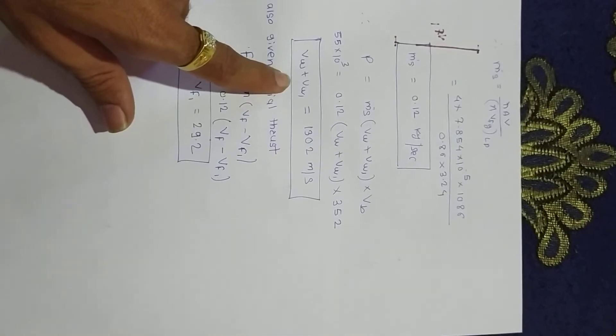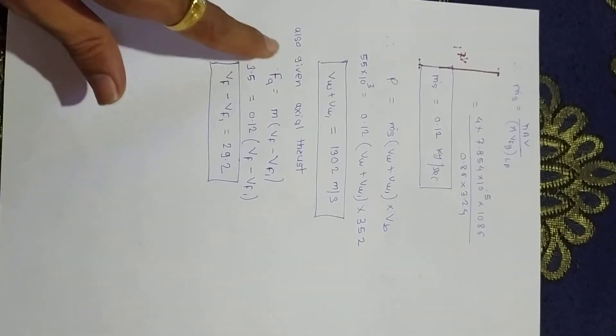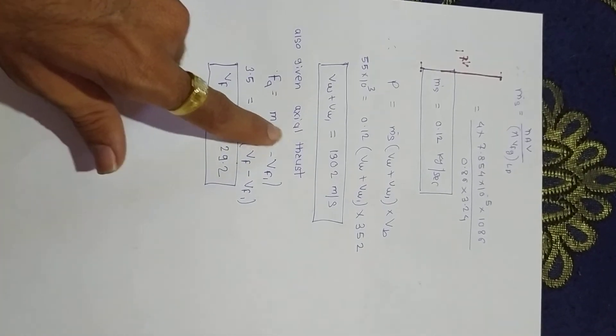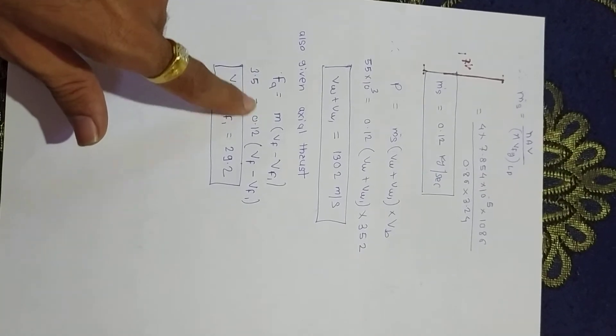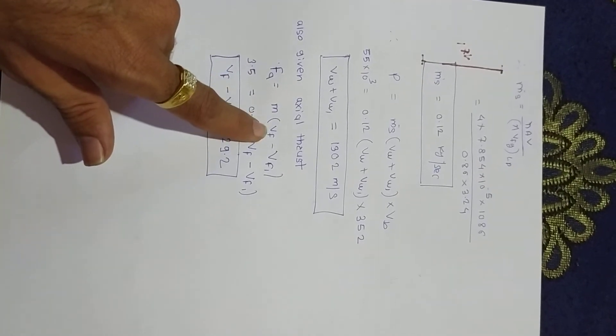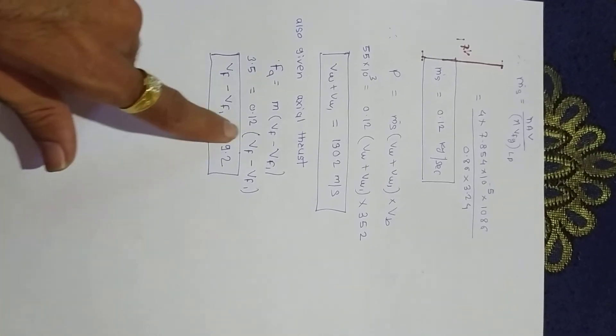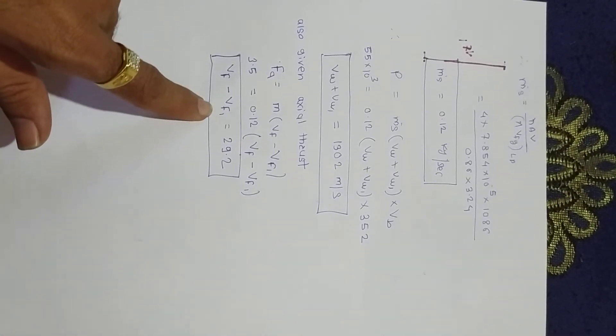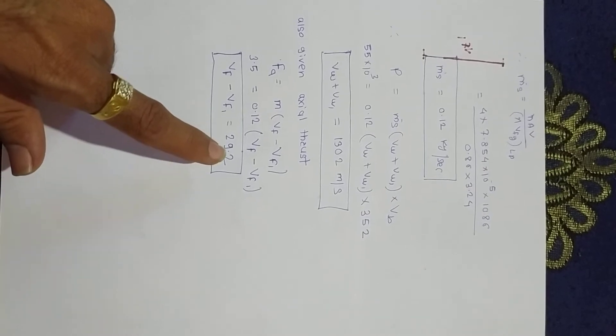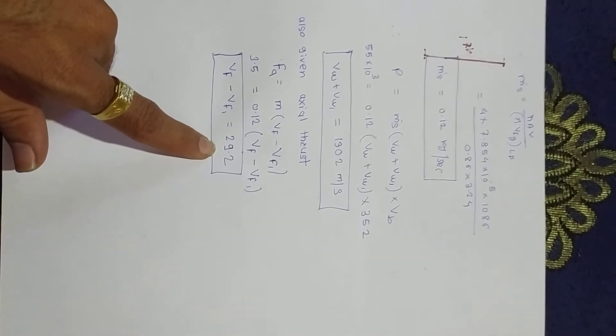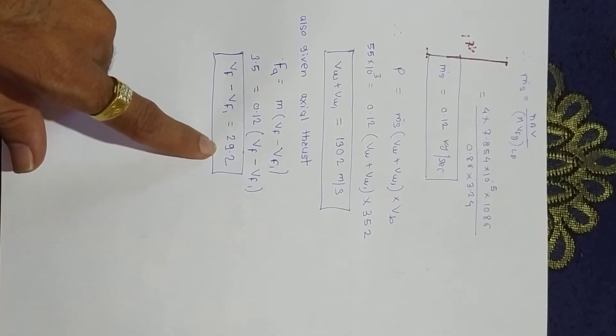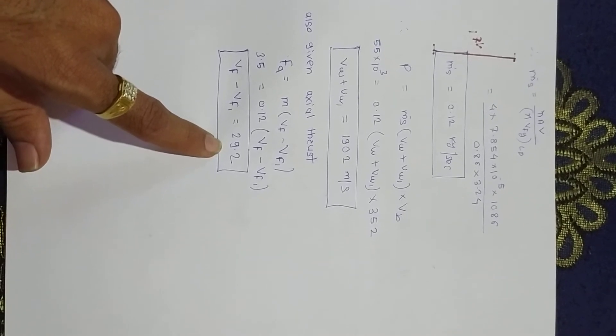Now the fundamental formula: power P is given, ms we calculated, and we can calculate total whirl velocity. They also give axial thrust in the numerical as 3.5 Newtons. The formula is ms times (VF minus VF1). Mass of steam is there, so we get one relation: VF minus VF1 equals 29.2. This relation is very useful for completing our velocity triangle diagram.